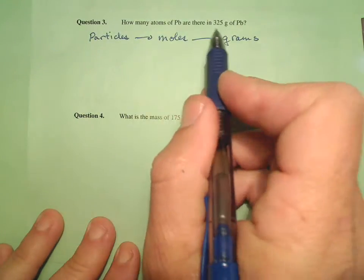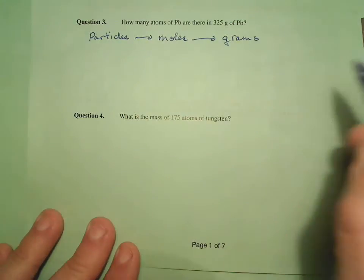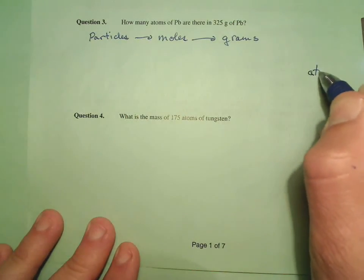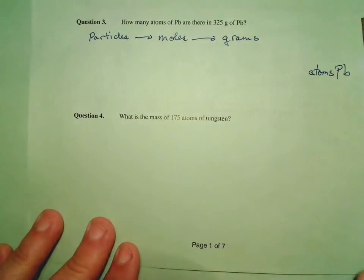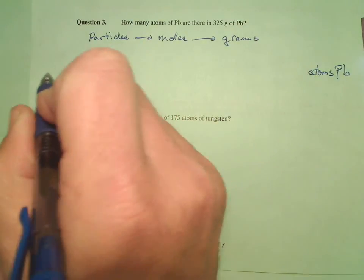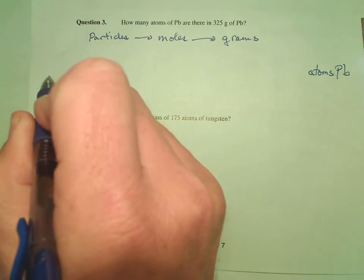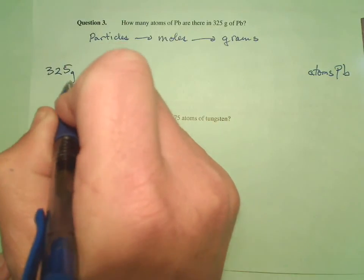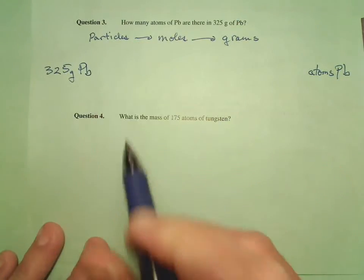So we're heading to what? Particles, atoms of lead, so I'm going to write that over here. Remember, atoms of lead, and we only have one place to start, which will start with 325 grams of lead.